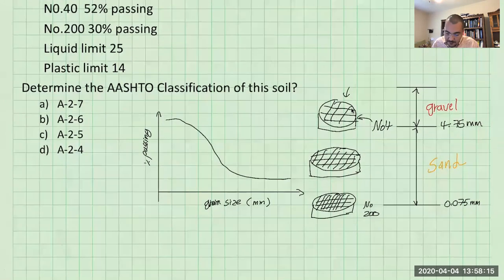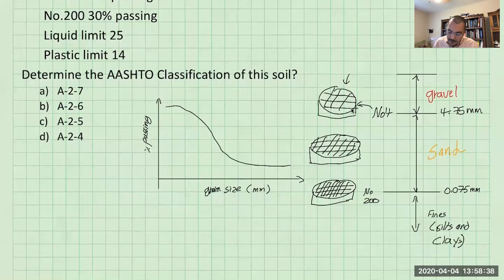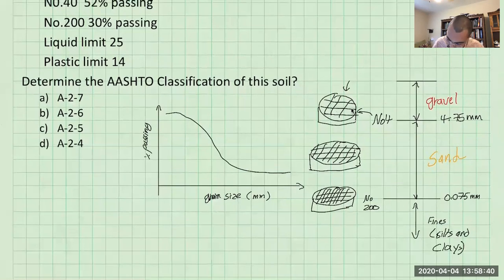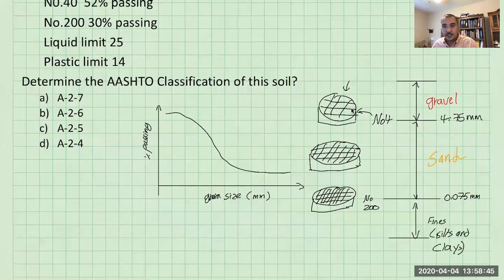Number 200 has an opening size of 0.075 millimeters. And here we have sand. Now anything passing the number 200 sieve is considered fines, silts and clays. So that's the three main distinctions and the sieves that allow us to make this distinction.